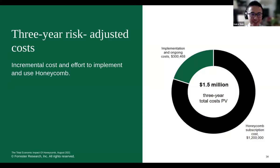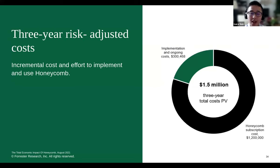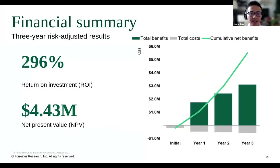Let's also unpack the costs. For implementation, that includes internal labor as well as several hours of training for Honeycomb users. Ongoing costs are a couple of hours a month of maintenance. Our biggest cost is the Honeycomb subscription cost of $1.2 million over three years. And for our financial summary: the composite organization experiences a 296% ROI and a $4.4 million net present value. I urge you to read the full Forrester Total Economic Impact study to see how your organization can drive these results.